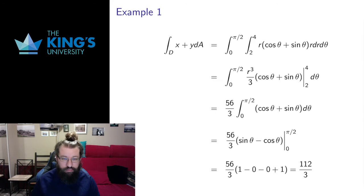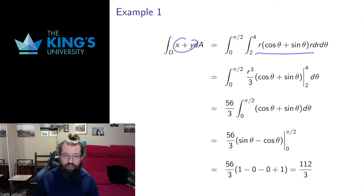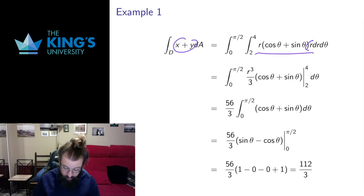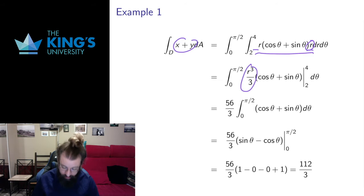To set up this integral I need to change x and y to their appropriate polar coordinate forms. x turns into r cos theta, y turns into r sin theta, and then I do the iterated integral. Make sure to include the Jacobian here — don't forget that Jacobian term. Anytime you use polar coordinates you need that Jacobian r there. So that's going to be r, and r times r is r squared, and it turns into r cubed over 3.